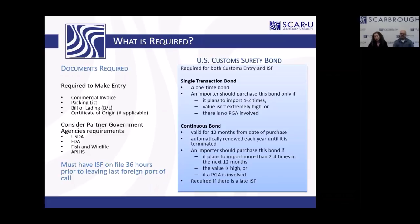You'll also need your surety bond. There are two kinds: a single transaction bond, which is a one-time bond good if you plan to import just a few times a year, though it won't be ideal if the value is very high or if a PGA like FDA is involved — because you have to purchase a bond that's three times the value of your goods. A continuous bond covers a 12-month period for a one-time fee and covers your ISFs as well.